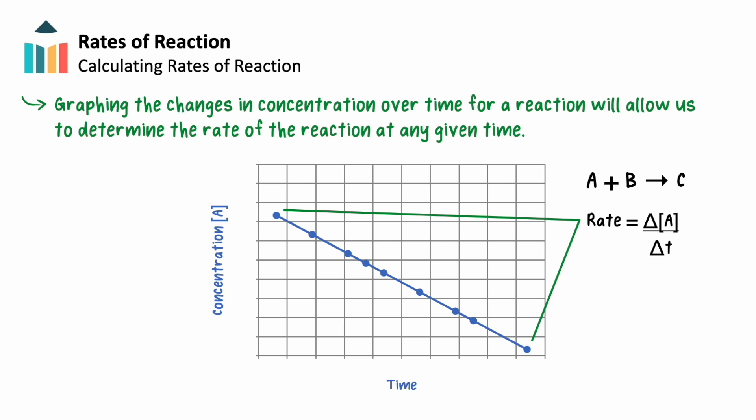Most concentration time graphs are not a straight line, as the rate of reaction decreases as the reactant is used up. To measure the rate of reaction at any particular time, a tangent line is drawn to the curve. The reaction rate would then be the gradient of the tangent.